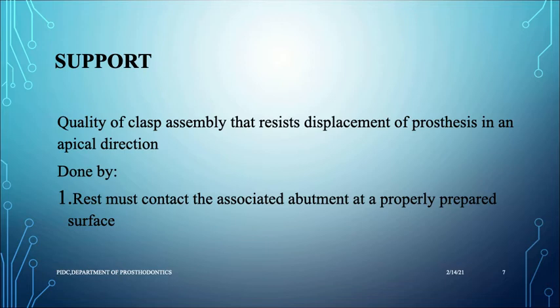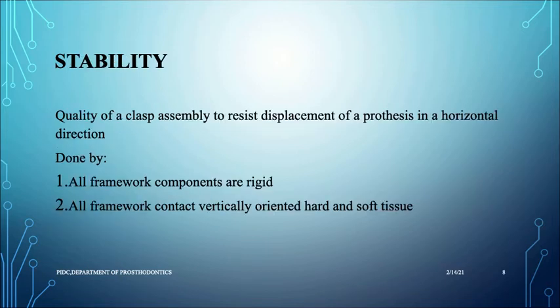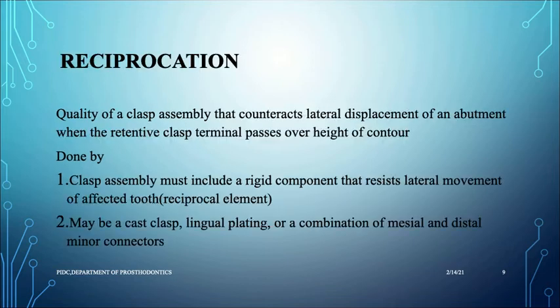The clasp has a part called a rest which lies on the abutment tooth, and this rest prevents displacement of the denture towards the tissue surface, giving support to the removable prosthesis. Stability is the ability to prevent displacement in the horizontal direction, achieved by ensuring all framework components are rigid and all framework contacts are with vertically oriented hard and soft tissue.